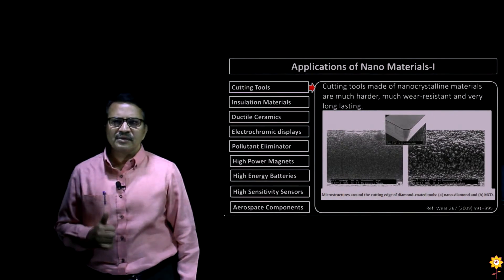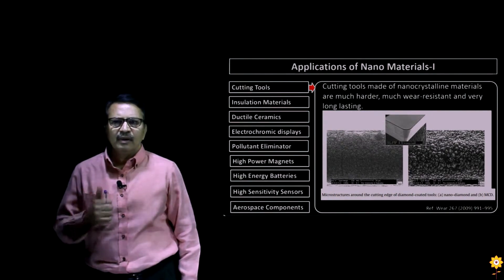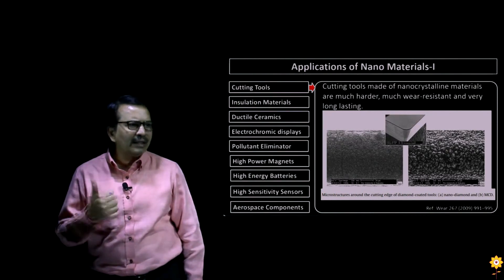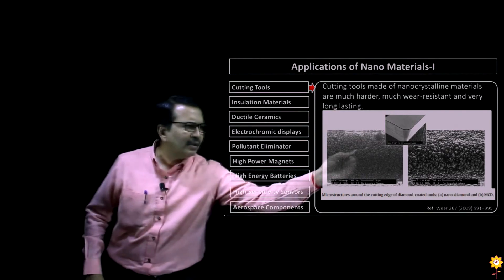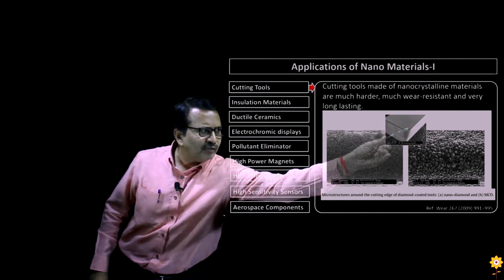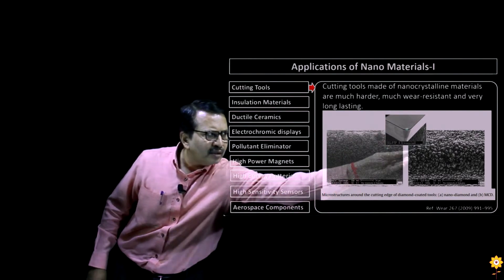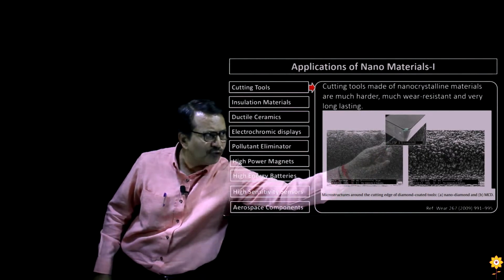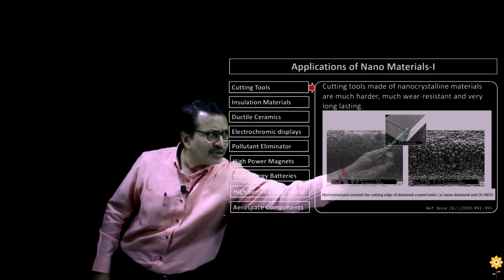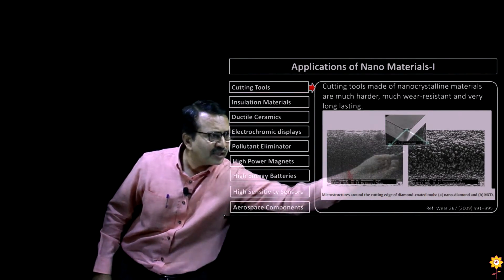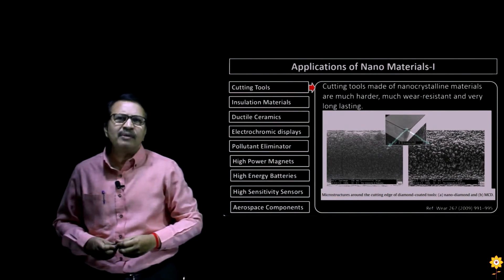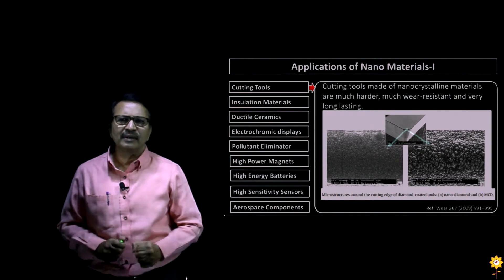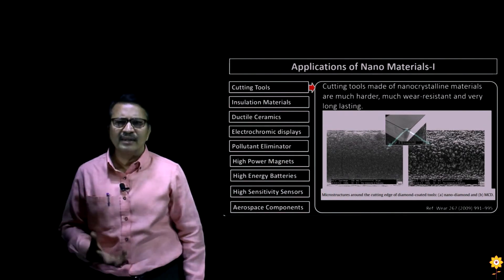Cutting tools made of nanocrystalline materials have a much larger life, basically because they are much harder and wear resistant. Here is an example of a tool — this is the edge of the cutting tool, and these two images are enlarged views of the surfaces. As you can check from the images, there are diamond structures in both of them, and because of this, the cutting tool due to its nanocrystalline property will be more resistant to wear and tear.